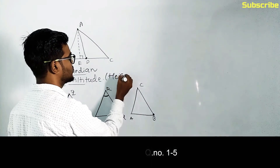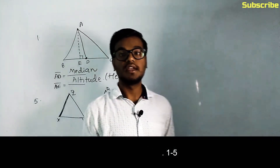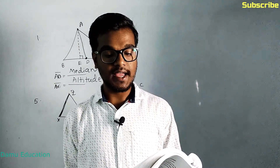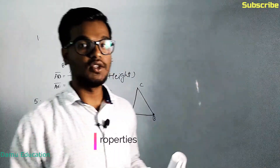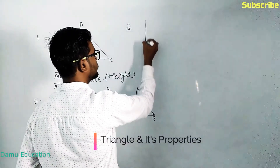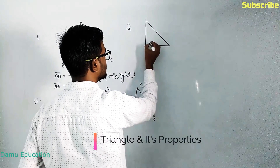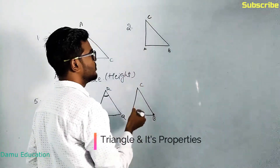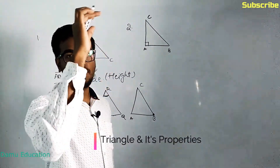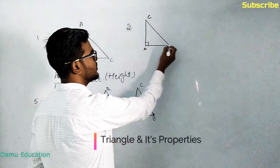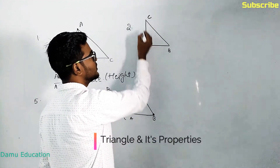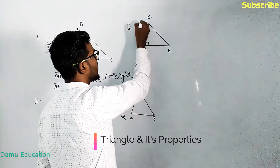Our next question is: name the triangle in which two altitudes of the triangle are two of its sides. The answer is a right angle triangle. In a right angle triangle ABC, with the right angle at one vertex, the perpendicular distance from vertex to base — for example AB — makes 90 degrees, so from A to C is the altitude.